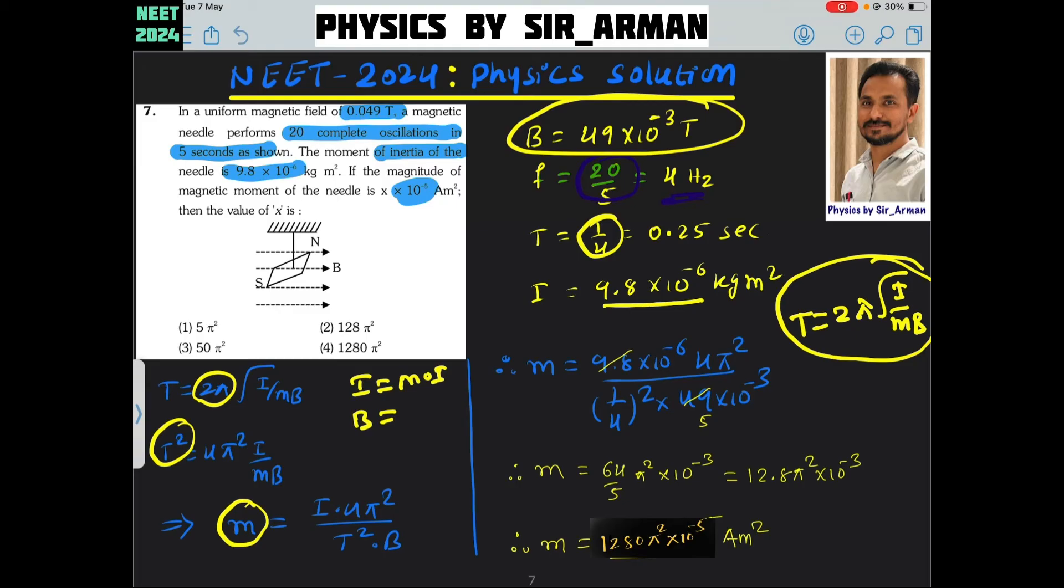If you make m as a subject, then it is i then 4 pi square, t will be here, so it is t square mb. Now I have put all the data in this expression here. The value of moment of inertia is 9.8 into 10 raised to minus 6, then 4 pi square. The answer is in pi square, so we will not remove pi square. Then the time period here is 1 by 4 seconds, so 1 by 4 square, and b magnetic field is 49 into 10 raised to minus 3.